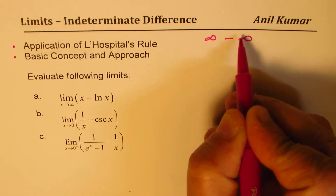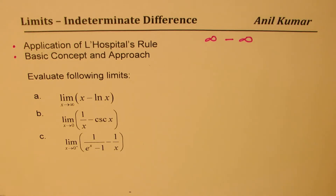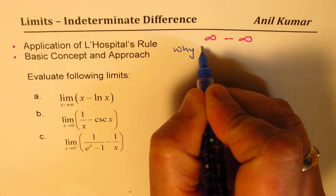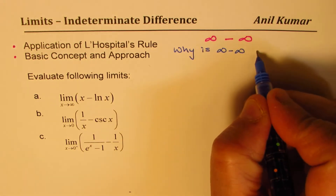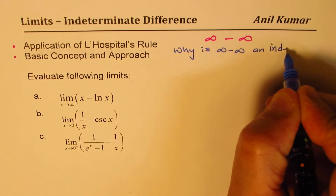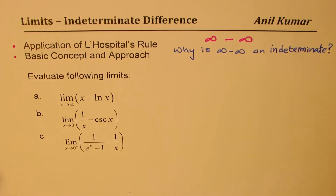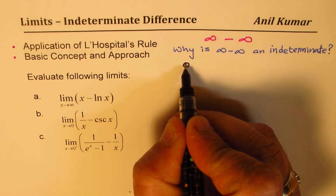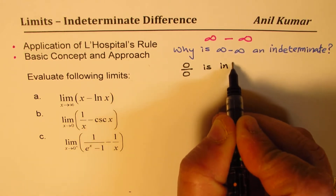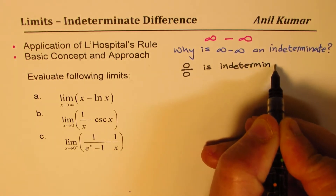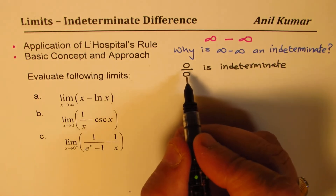Differences of the type infinity minus infinity are indeterminate differences. The question is: why is it indeterminate? Let's answer this — why is infinity minus infinity an indeterminate? We know that zero over zero is indeterminate, and from that we can actually conclude that infinity minus infinity is also indeterminate.